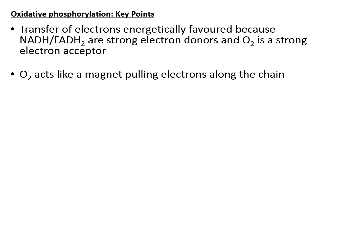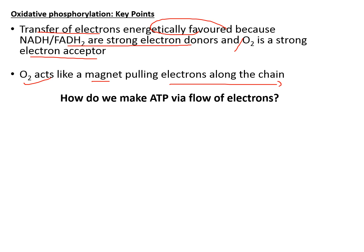The transfer of electrons is an energetically favored process because both NADH and FADH2 are strong electron donors with a very negative redox potential, while oxygen is a very strong electron acceptor with a very positive redox potential. To make it simple, you can say that oxygen acts almost like a magnet, pulling electrons along the chain toward itself.